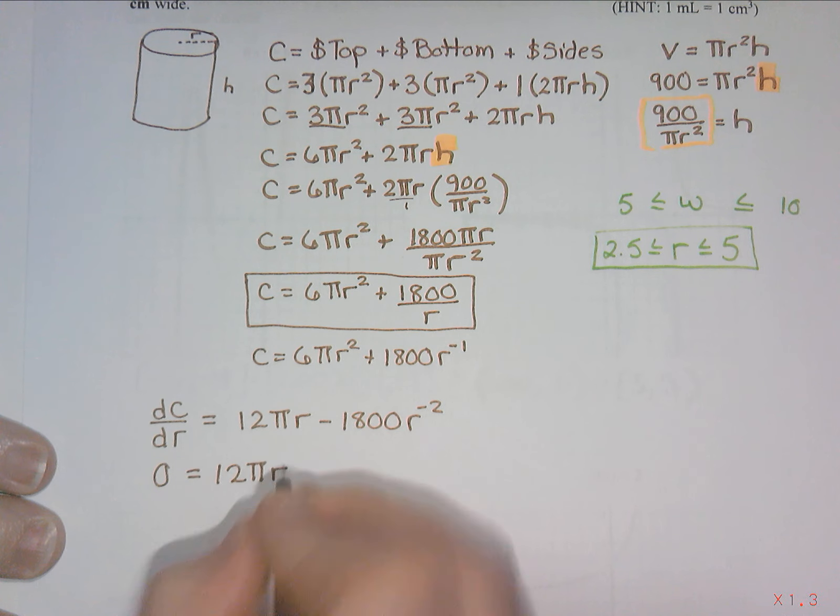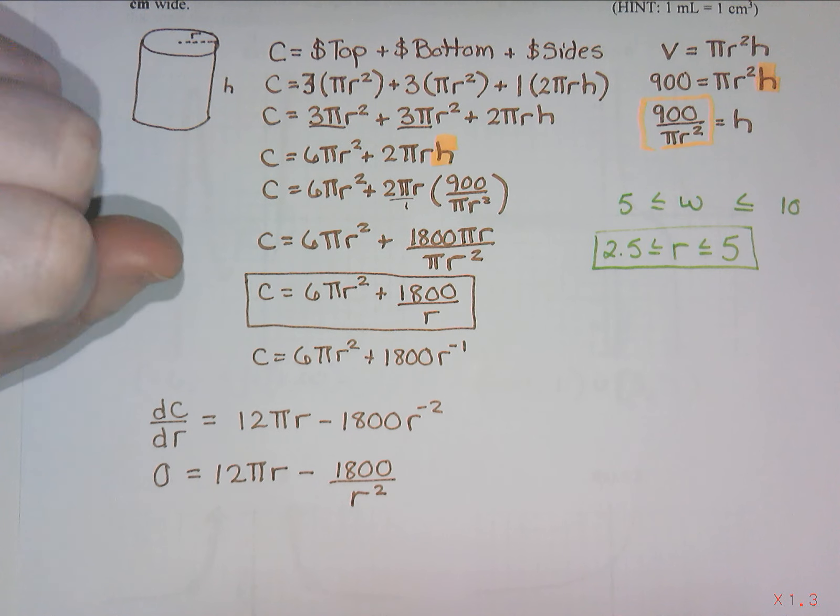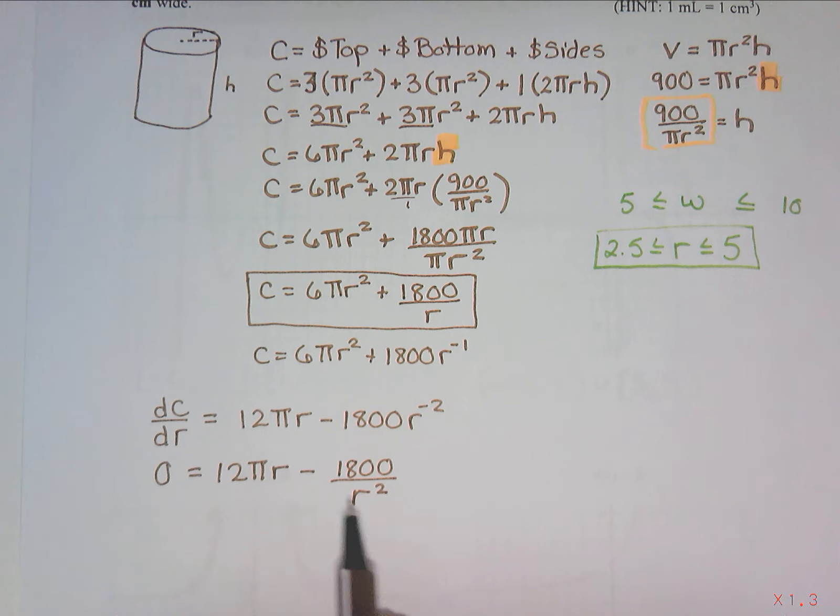I set my derivative equal to 0 to find our max min. So I have 12 pi r. Now I have a choice. I could try to factor, or I can try making it a fraction and then going from there. It is up to you, whatever you're more comfortable with. Normally when we have more than one r, I recommend that you factor. But in this case, it's actually easier if we just move one of them to the other side and then cross multiply.